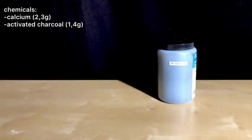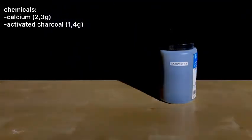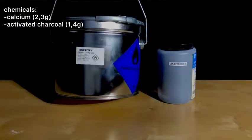Welcome back everyone, today we are going to make some calcium carbide. For this you will need 1.4 grams of activated carbon and 2.3 grams of calcium.